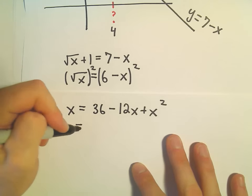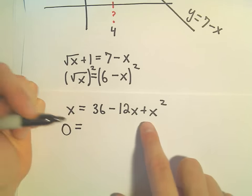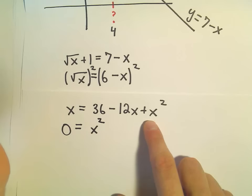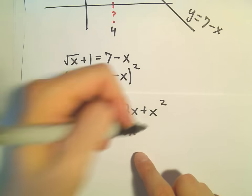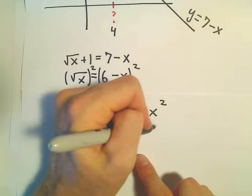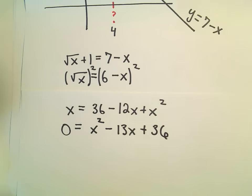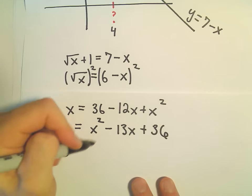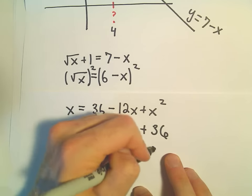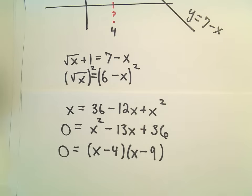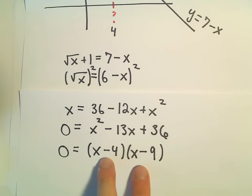So I'm going to make the left side equal to 0 by subtracting x. I'm going to write the x squared first. So we would have x squared, we would have negative 13x, and then plus 36. And I think this is going to factor nicely. We would get x minus 4 times x minus 9.